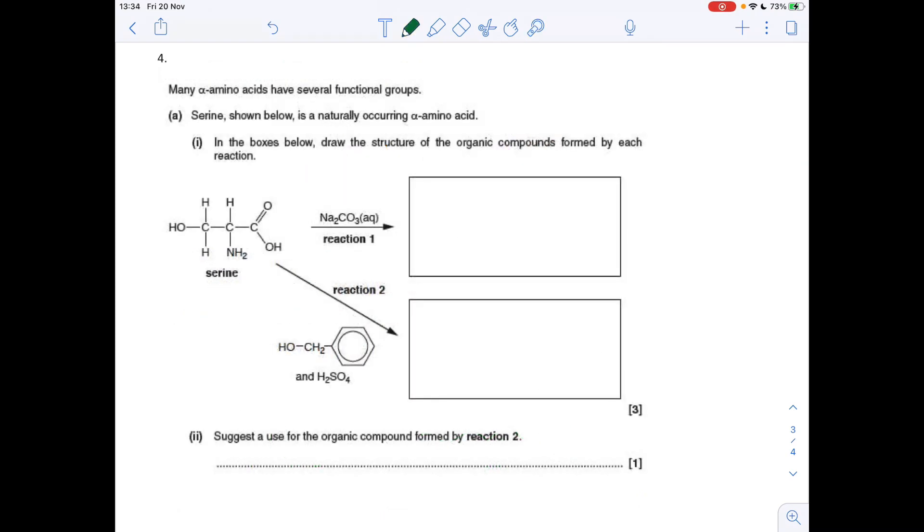Question four now. More reactions of amino acids. Sodium carbonate solution. What part of serine is it going to react with? Well, just the carboxylic acid group. Doesn't react with the OH group, and it certainly doesn't react with the NH2 group. So that's what you'd get there.